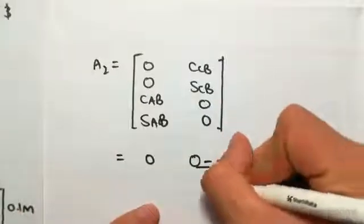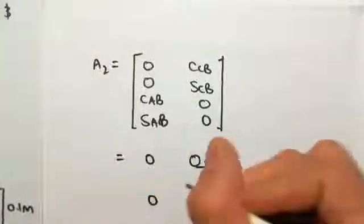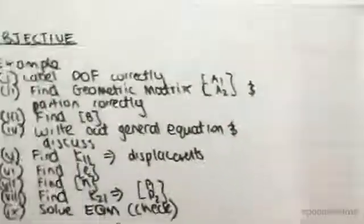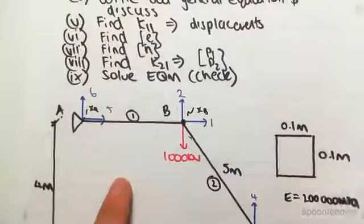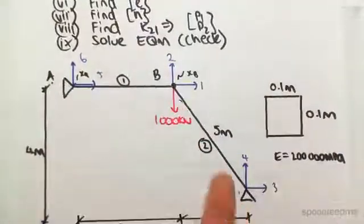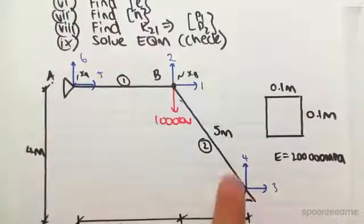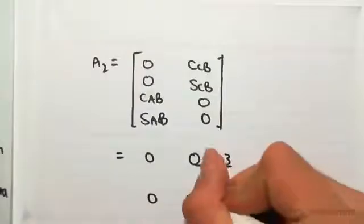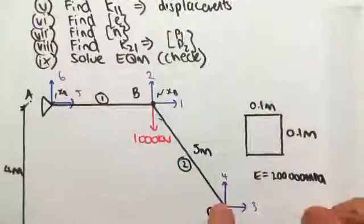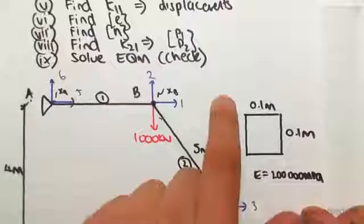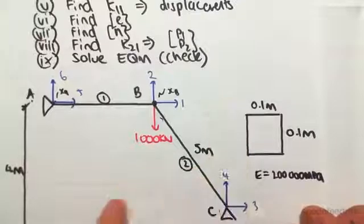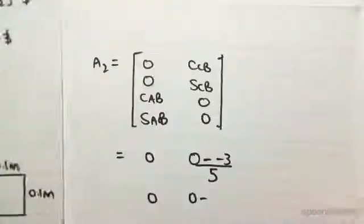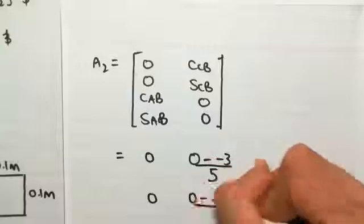This would be zero sine CB, so sine from C to B. Fixing us at C going across to B, but now we're doing sine, which is vertical. Here's our reference axis, so it's zero minus this reference axis. We're going up, which is positive four meters. We're going up four meters, so plus four, on a length of five meters because the member CB is five meters.